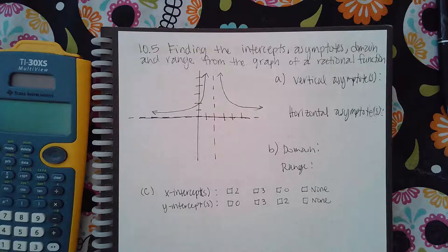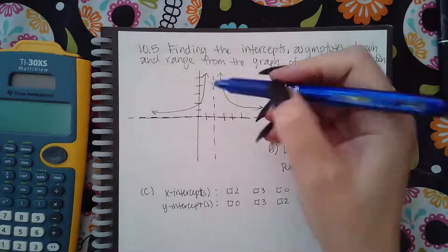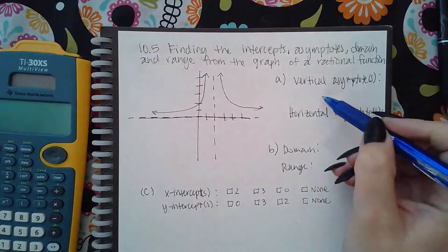Vertical asymptotes are vertical dotted lines on the graph that the graph will not touch. They're invisible lines, that's why they draw them dotted. So this vertical asymptote here, I just need to write the equation for it.